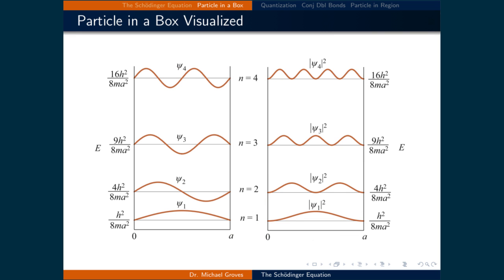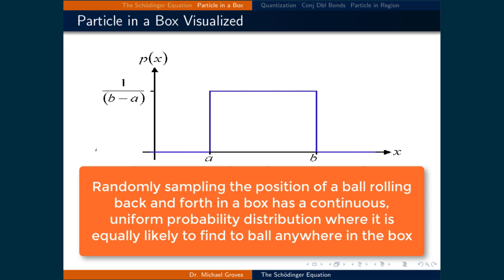This is strikingly different from the classical case where we are used to where, if we were to randomly sample a ball moving back and forth in a box, it would be equally likely to find it anywhere.